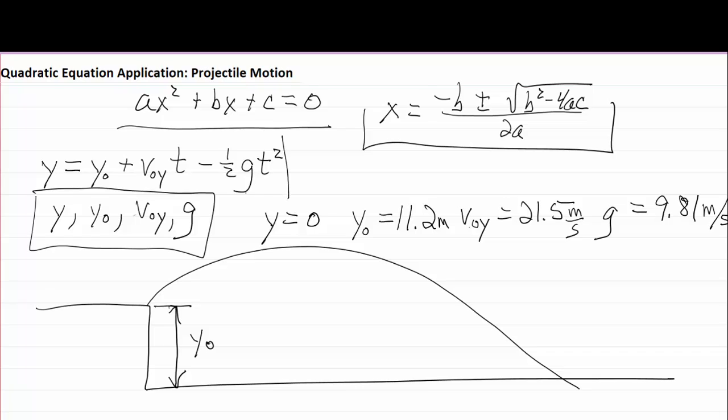And this equation right here, if I can get a box drawn around it, is the equation that describes this motion. It has a minus sign on that last term because things fall downward and we usually let upward be the positive direction.